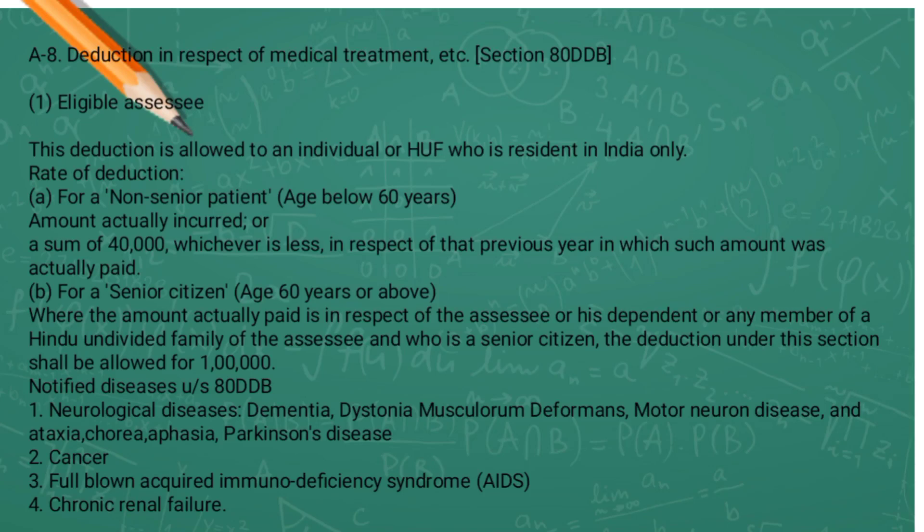The expenditure must be incurred for himself in case the assessee is an individual. The expenditure may be incurred for any member of HUF in case the assessee is an HUF. Dependent means — in case of an individual — the spouse, children, parents, brothers and sisters of the individual. In case of HUF, a member of HUF is known as a dependent, who is wholly or mainly dependent on such individual or HUF for his support and maintenance.